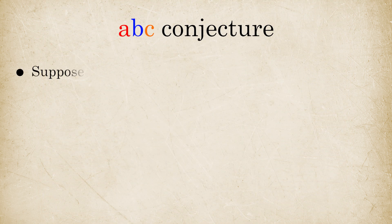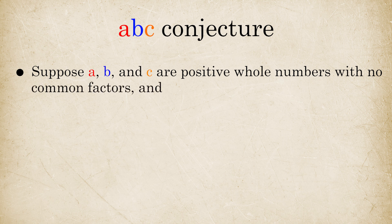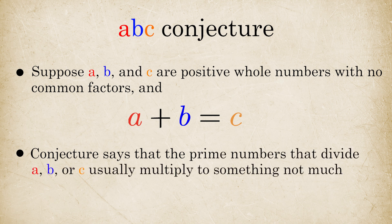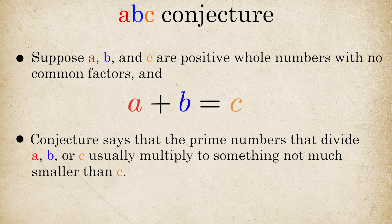The ABC conjecture says that if A, B, and C are positive whole numbers with no common factors and A plus B equals C, then the prime numbers that divide A, B, or C usually multiply to something not much smaller than C. Okay, that was a mouthful. Let's start with an example.